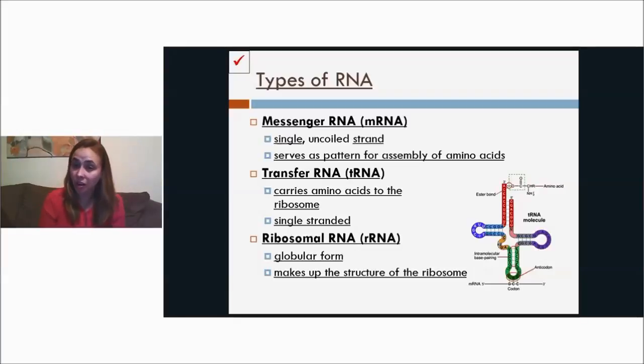Ribosomal RNA or rRNA is just a globular form, and it makes up the structure of the ribosome. So the ribosome is just RNA and protein.